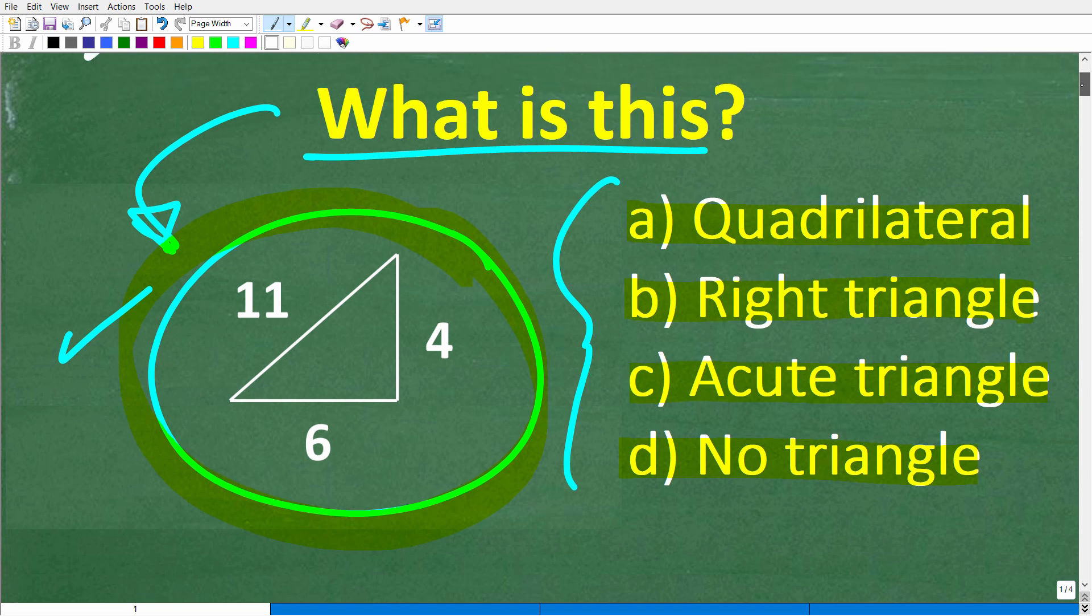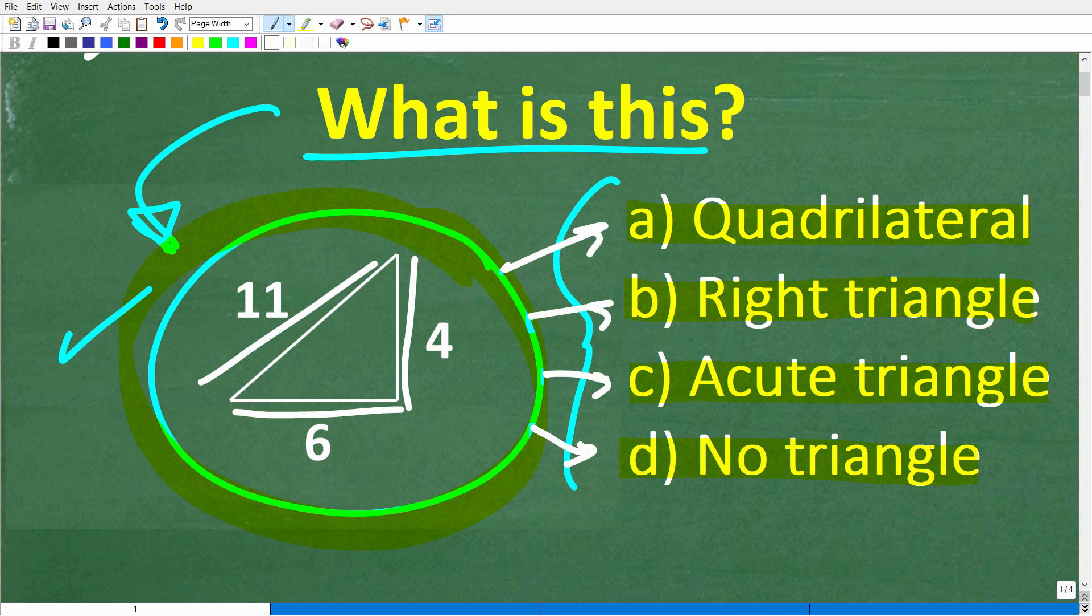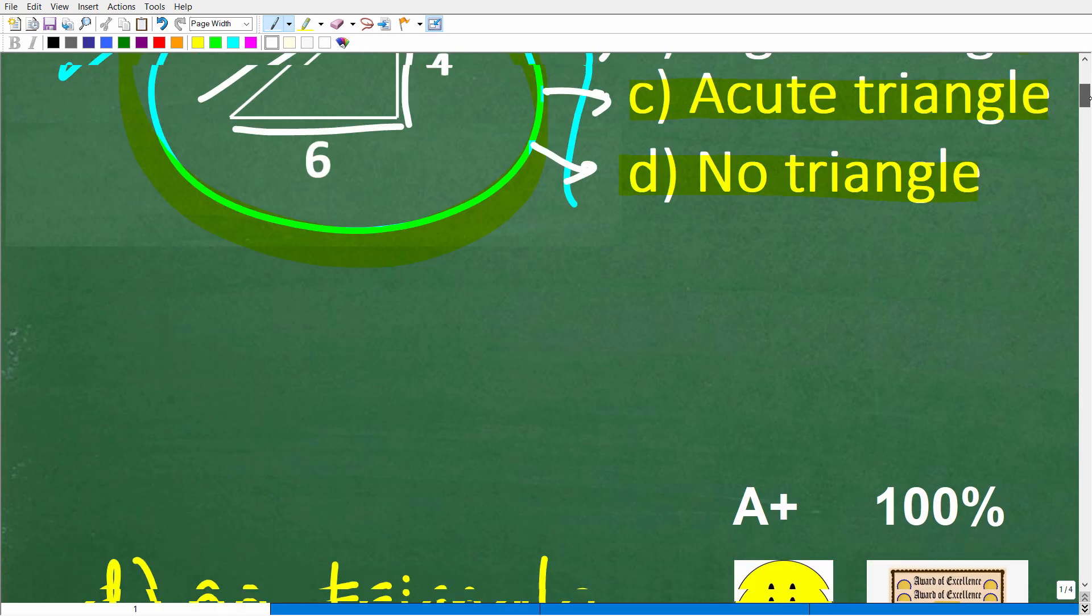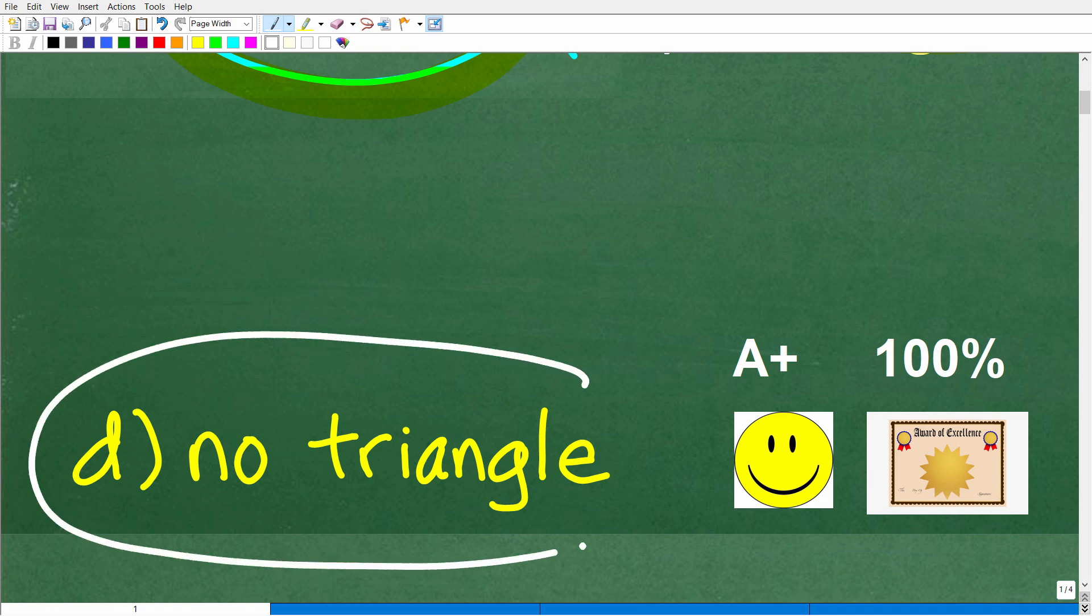All right, so we have this thing right here. This side is 4, this side is 6, this side is 11. So which one of these here best describes this figure? All right, so let's take a look at the right answer. The correct answer is D. This is not a triangle. It's not a quadrilateral, and it's definitely not a triangle. So it's just something, but this is the correct answer given our choices.